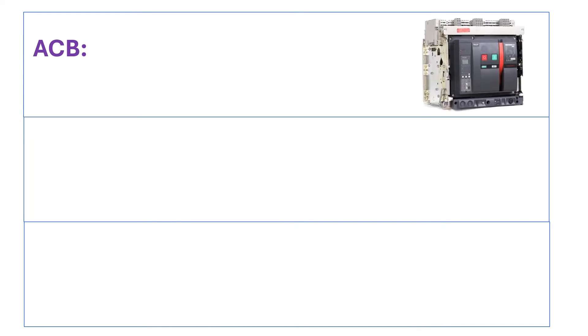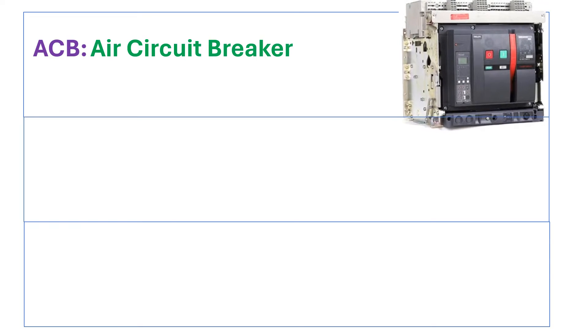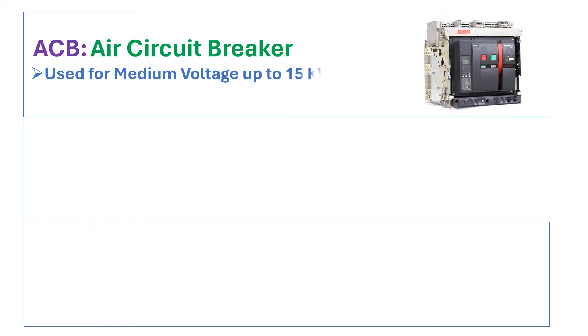First is ACB. ACB stands for air circuit breaker. It is used for medium voltage, that is up to 15kV systems.